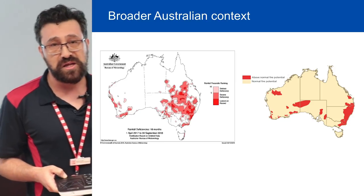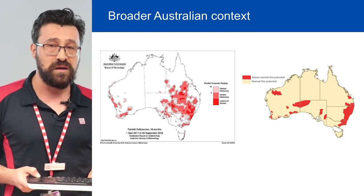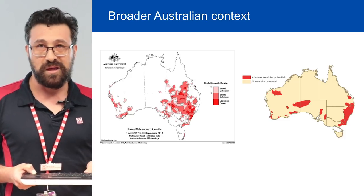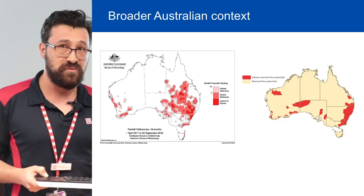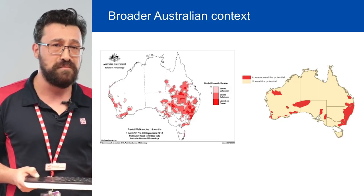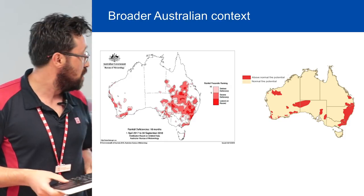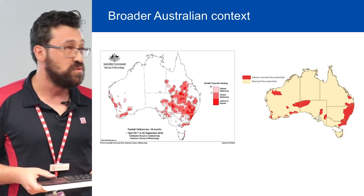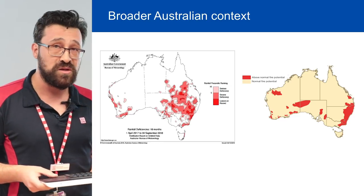Starting with the Australian context, this diagram shows that most of eastern and northern Victoria, as well as most of eastern Australia and Western Australia, are currently under serious rainfall deficiency. This means that if bushfires occur in Victoria over a prolonged period, we likely won't be able to rely on other states for firefighting services. On the right is the AFAC bushfire seasonal outlook, which reflects current conditions and is quite dominant along the east coast of Australia.